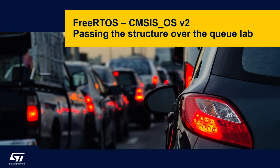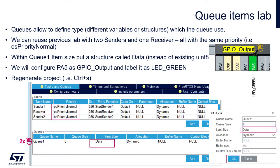Hello, let's continue with exercises on queues. This time we will practice sending a structure over the queue. Till now we were considering queues transmitting simple data. Queues allow defining the type of data which would be passed over the queue — it can be different variable sets, structures, or even pointers. In this example we will check how to use a different data type than a simple type.